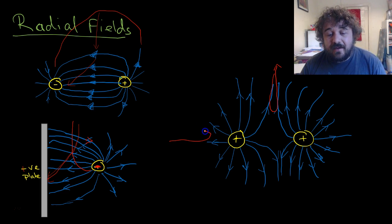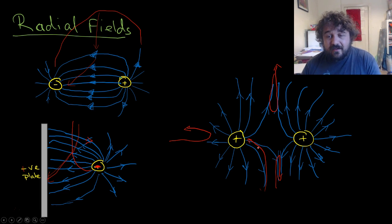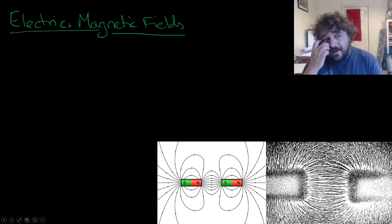If a positive charge came in, it would repel out. If a negative particle came in, depending on which one it was closer to or how fast it was going, its momentum, it would be pulled towards one of the particles in the center there. That's your radial field. You should know how to draw those.